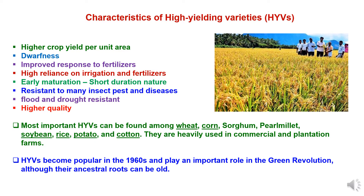These hybrids and varieties have the characteristics of flood and drought resistance and give better quality yields. High quality and quantity of crops can be produced as hybrids are developed considering various yield-contributing factors. Important high yielding varieties can be found among wheat, corn, sorghum, pearl millet, soybean, rice, potato, and cotton crops. They are heavily used in commercial and plantation farms. High yielding varieties became popular in the late 1960s and played an important role in the Green Revolution.